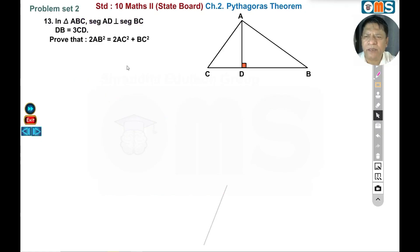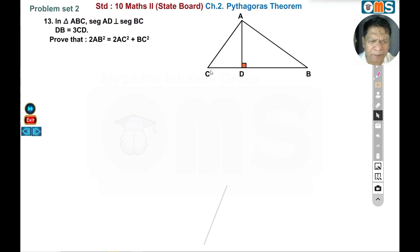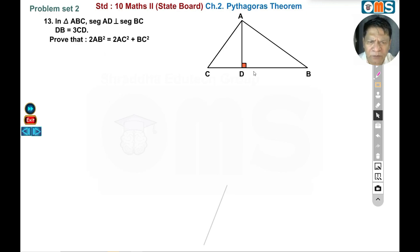Hello students, welcome to Online Math School. Problem set 2, question number 13. In triangle ABC, AD is perpendicular to BC, with D between C and B. BD is equal to 3 times CD. Prove that 2AB square is equal to 2AC square plus BC square.